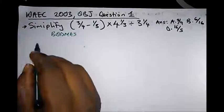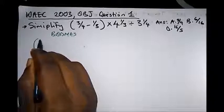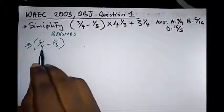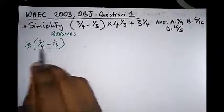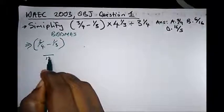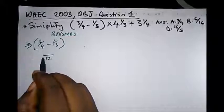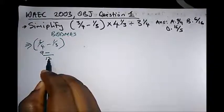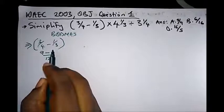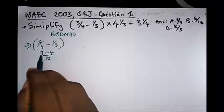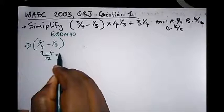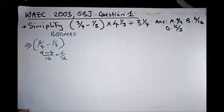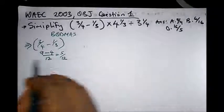Let's solve what's in the brackets: we have 3 over 4 minus 1 over 3. What's the LCM of 4 and 3? It's 12. 12 divided by 4 is 3, times 3 gives 9. Minus: 12 divided by 3 is 4, times 1 gives 4. And 9 minus 4 is 5. So here we have 5 over 12 from the brackets.